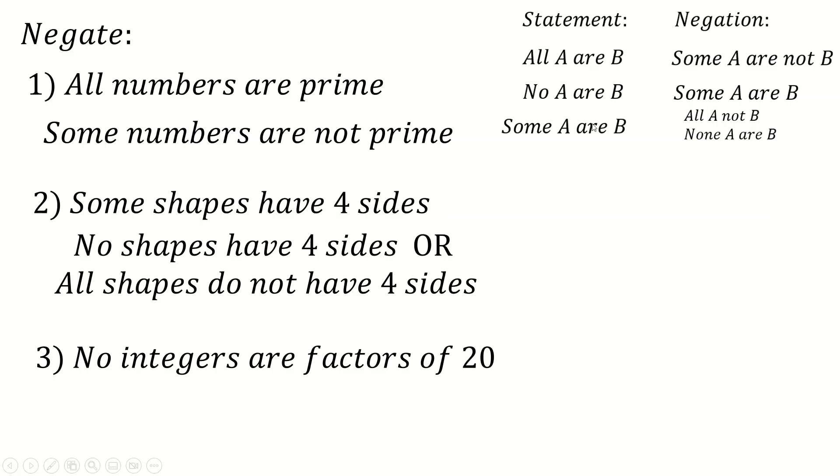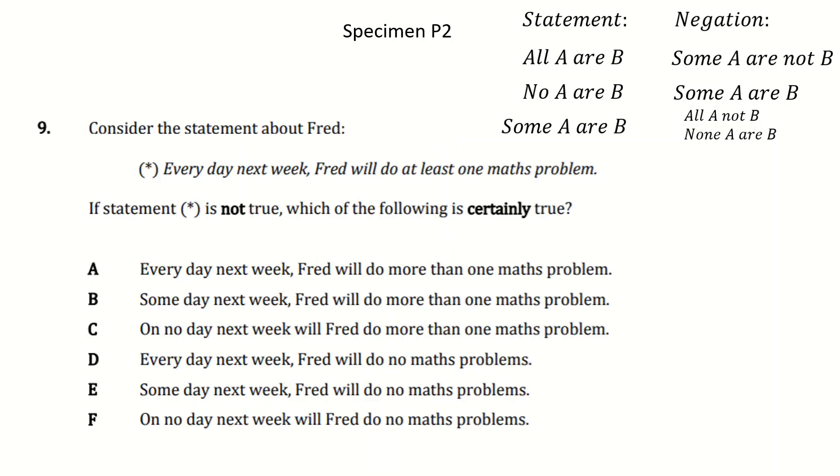And here, no integers are factors of 20. That's a no statement. So we're going to say some integers are a factor of 20, or factors of 20. So let's do some tomorrow questions now. So here's the, we'll just do them in order. The two spec questions, then 2017, then 2018.